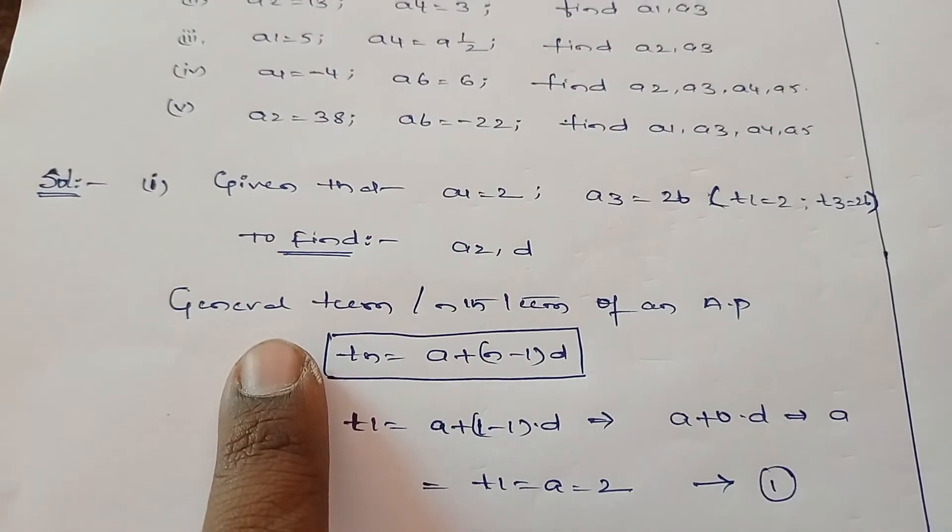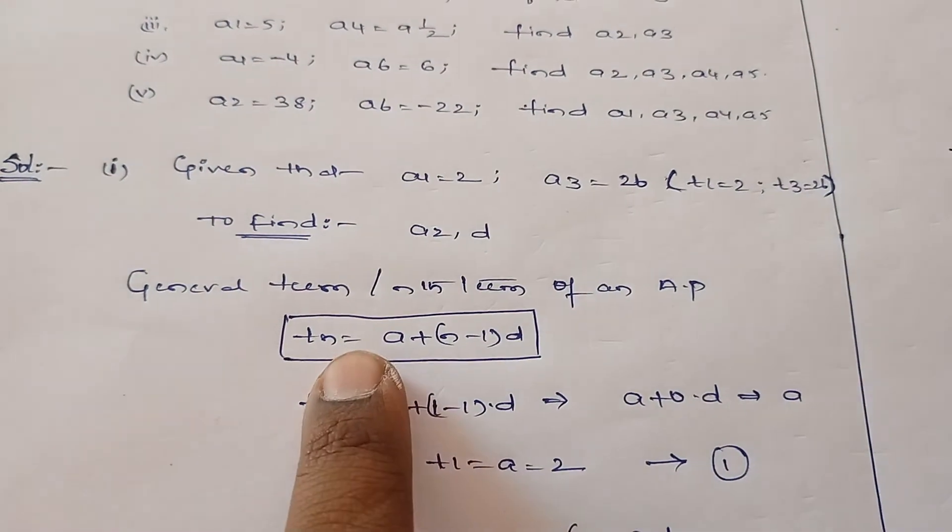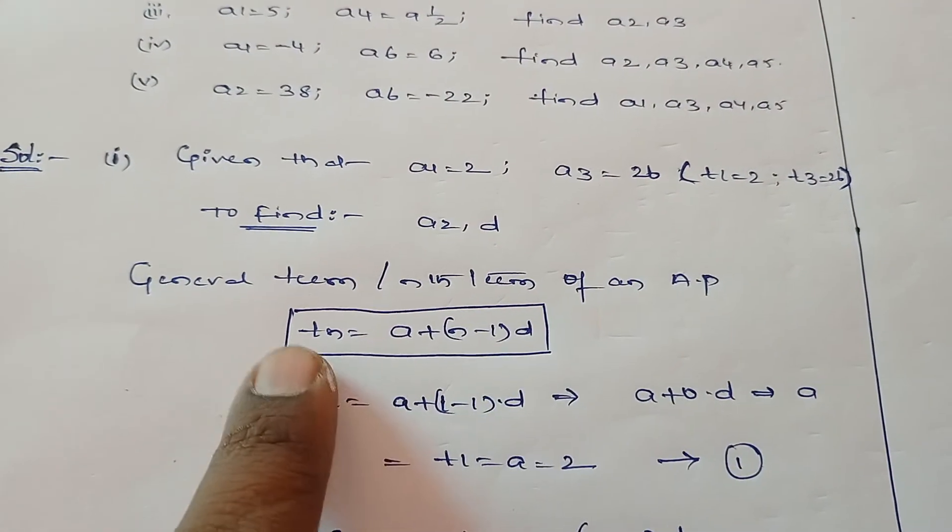Write down the formula. What is the general term or nth term of an AP? Nothing but tn equals a plus n minus 1 into d.